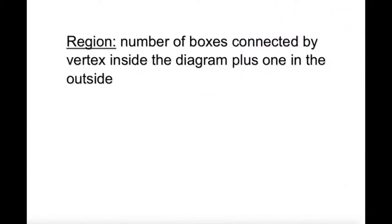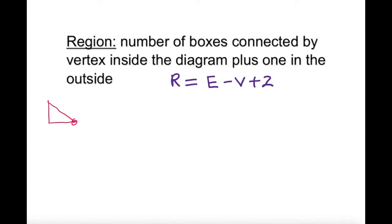The number of regions is connected by vertex inside the diagram plus one outside. There is actually a standard formula: R equals number of edges minus number of vertices plus two. That will give you the number of regions. I'm going to use that concept, but first let's look at some examples here — a, b, c.